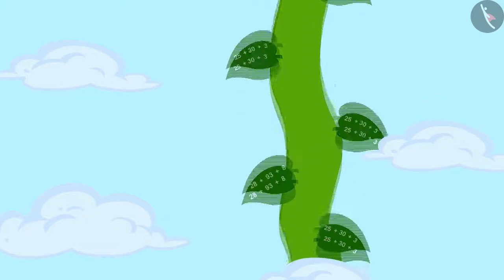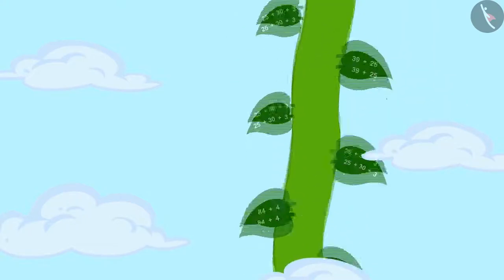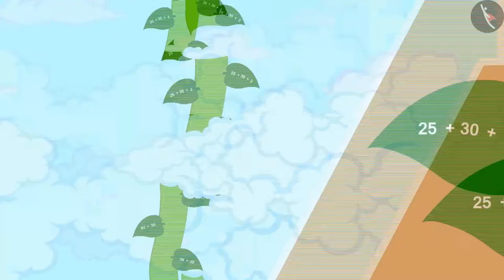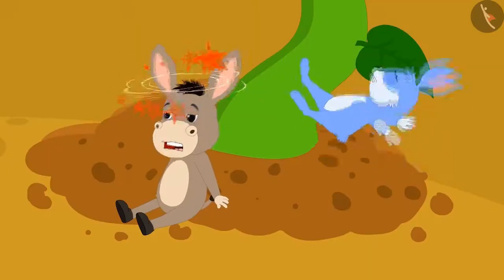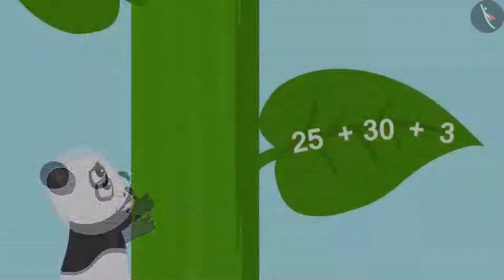The vine was very thick and tall. It was going so high that it was going high above the sky. There was something special about this vine. A math puzzle was written on each of its leaves. Many people tried to climb the vine, but every time they slipped and fell down.